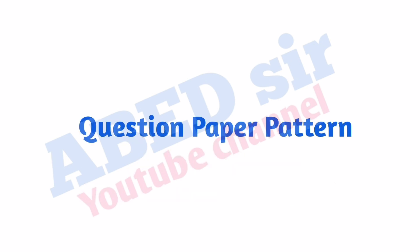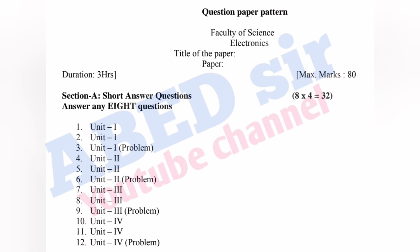Before that, on screen you can see the question paper pattern. This question paper has two parts, Part A and Part B. In Part A, short questions will be asked — three questions from each unit. Total 12 questions will be asked. Out of 12, you have to answer any eight, and each one carries four marks. So eight fours are 32 marks you will get from Part A.